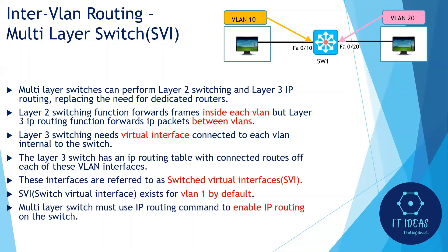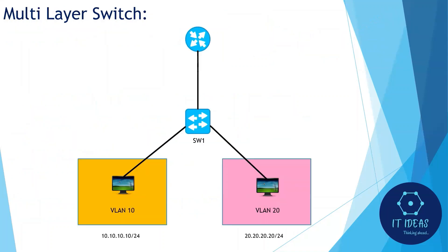Multi-layer switches support dynamic routing and inter-VLAN routing. A multi-layer switch must use the 'ip routing' command to enable IP routing on the switch. Unlike the previous methods, we no longer need a router to perform inter-VLAN routing — the layer 3 switch handles it directly. When a packet from one VLAN reaches the layer 3 switch, it will directly route the packet to the destination VLAN without the need of a router.